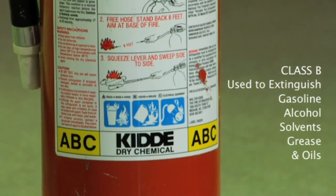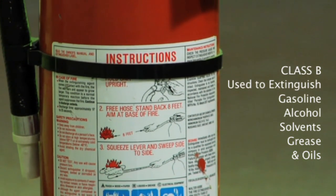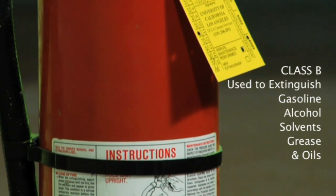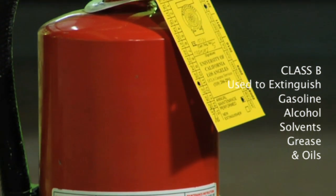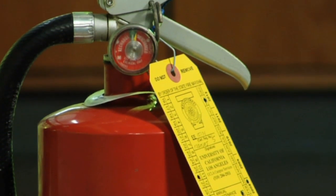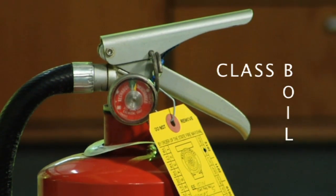Class B fire extinguishers are used to extinguish fires involving flammable liquids or gases, such as gasoline, alcohol, solvents, grease, and oils. Gases such as acetylene, methane, and hydrogen would also produce Class B fires. Some people find it helpful to remember that Class B fires can boil.